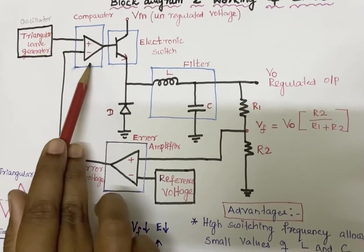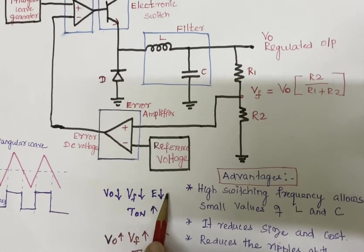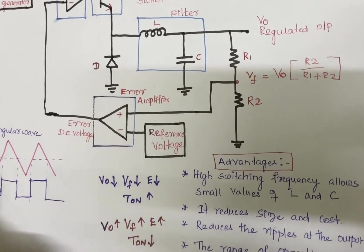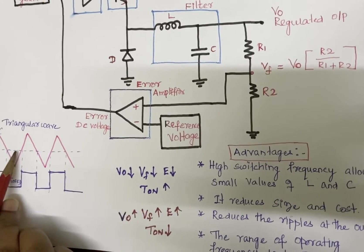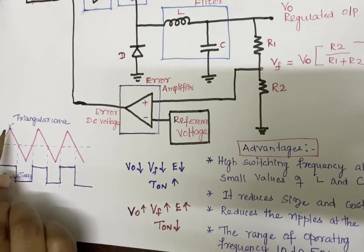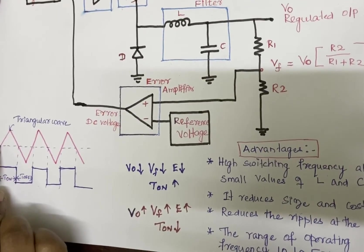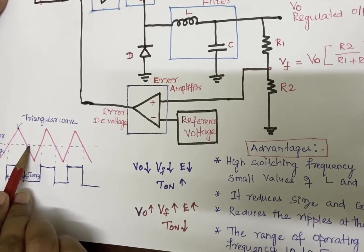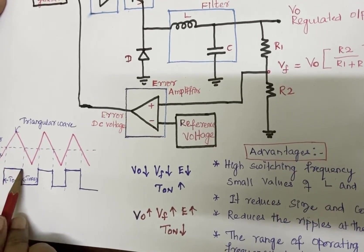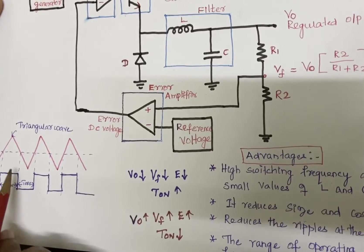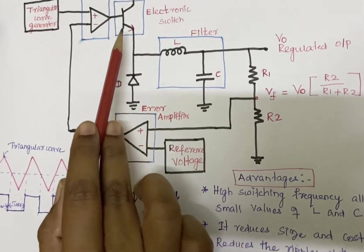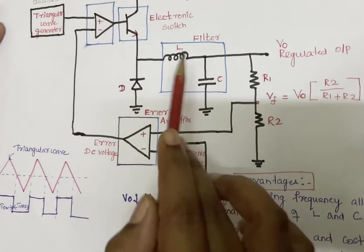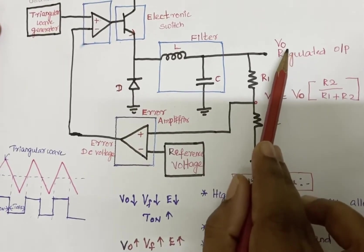The comparator compares the triangular wave and the error DC voltage. For example, the error DC voltage is reduced. During this time interval, compared to the triangular wave, the error DC voltage is reduced, so the T-on period will be increased. The transistor will be on for the T-on time, so that it produces the required increased output.